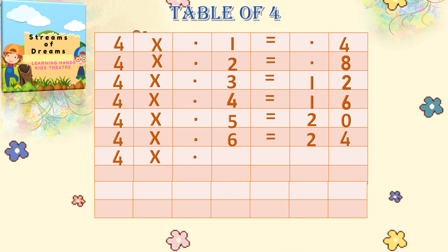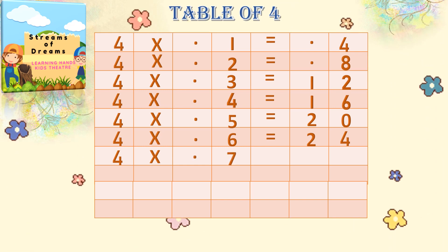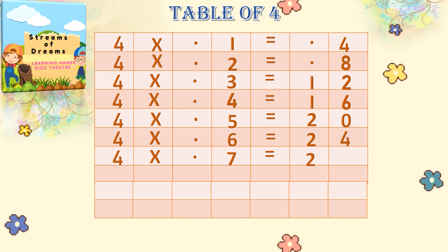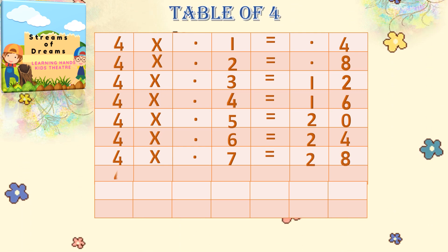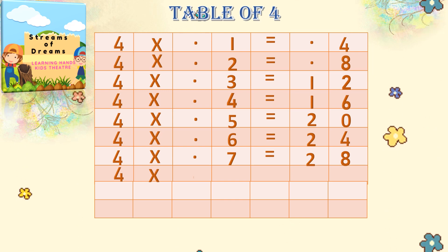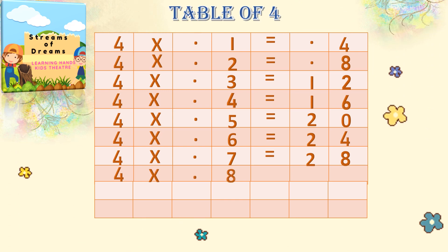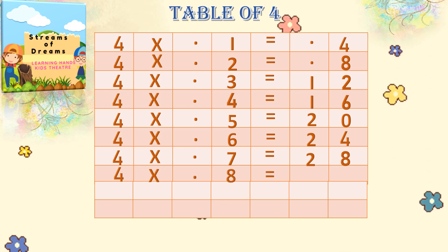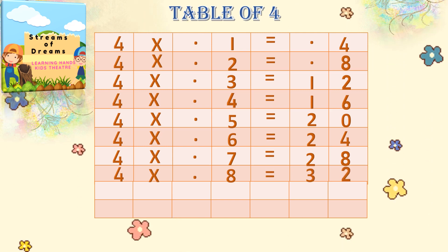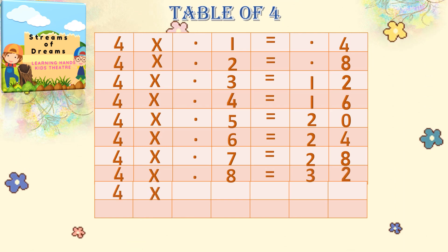4 into 7 equals — 24 plus 4 is 28. 4 into 8 equals — sorry, 28 plus 4 is equal to 32.